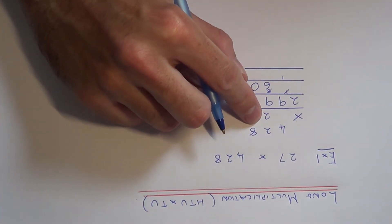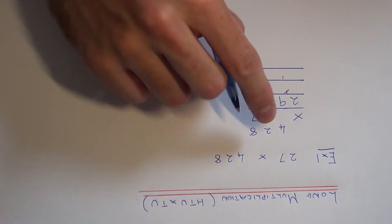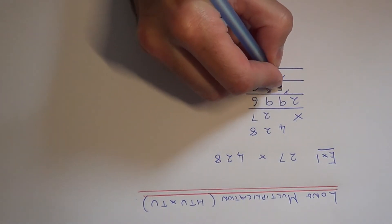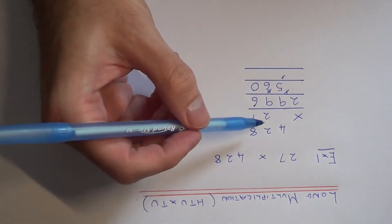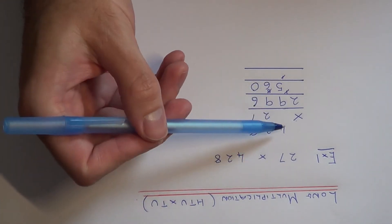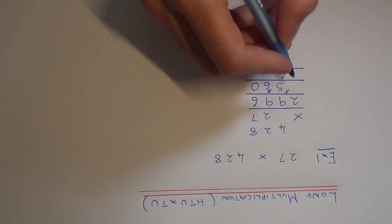Next we need to do 2 times 2 which is 4. Plus the 1 underneath makes 5. And then our final one will be 4 times 2 which is 8.